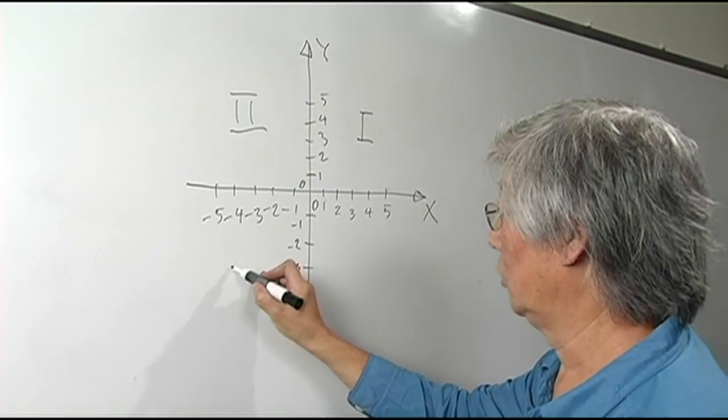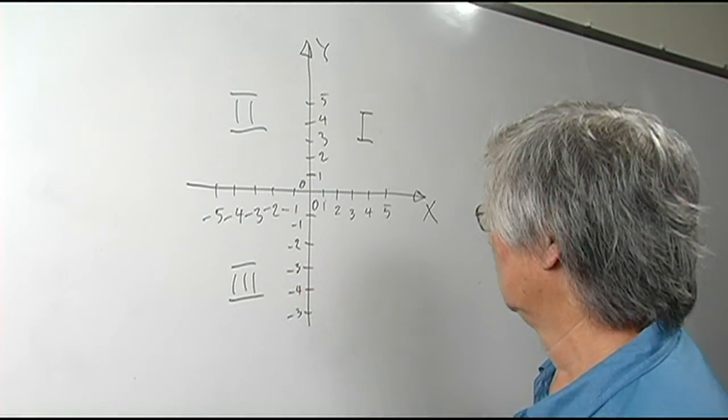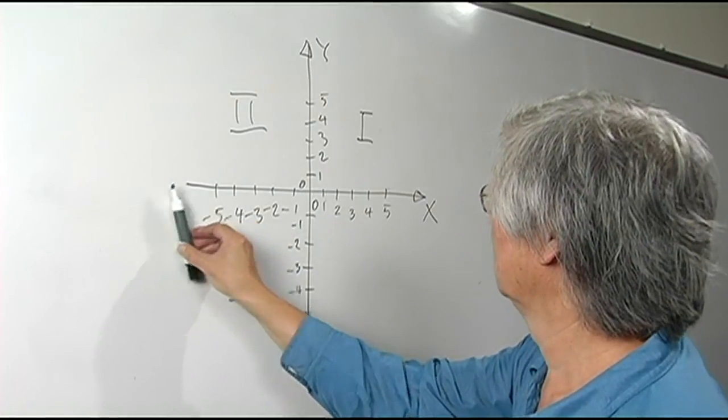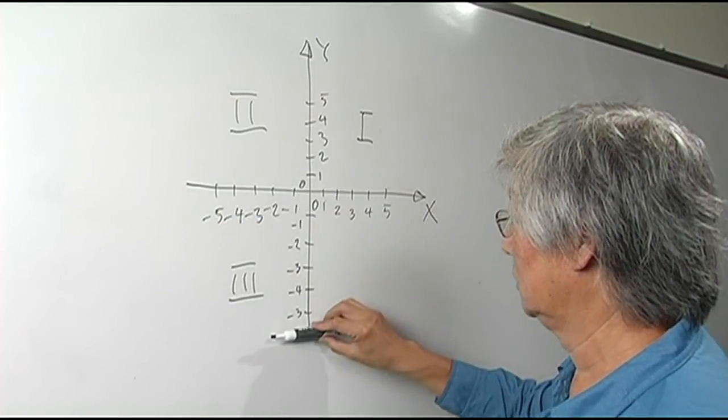The third quadrant—we're going counterclockwise here—has negative X values and negative Y values.